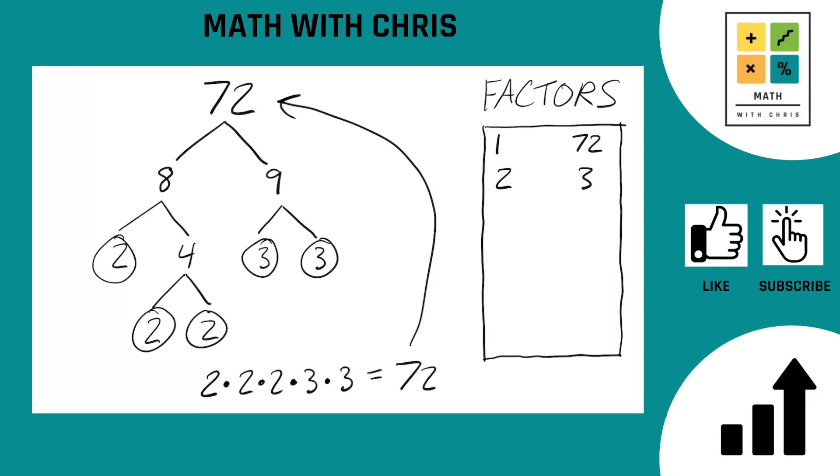And any number we hit along the way down this path also get banked. We have an eight, we have a nine, and we also hit a four. So eight, nine, and four all get banked.